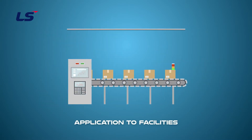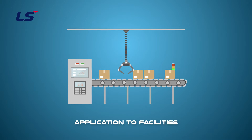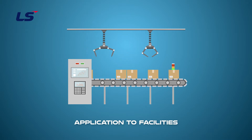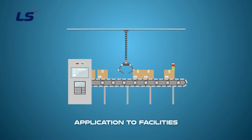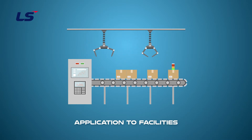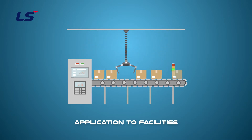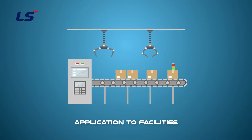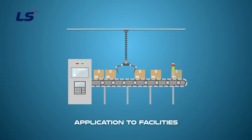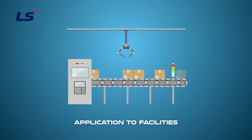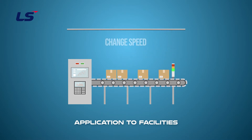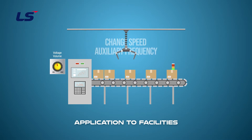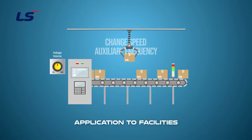Let's take an example applied in real life. When moving products using a conveyor belt in the manufacturing process line, precise speed control is required. If the speed is slower or faster than planned, the robot may move differently from the position where the object is picked up, as shown in the video, and the process may not operate smoothly. In this case, the speed of the conveyor belt can be adjusted at the main speed and controlled at a precise speed using the auxiliary speed.